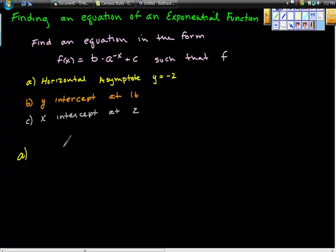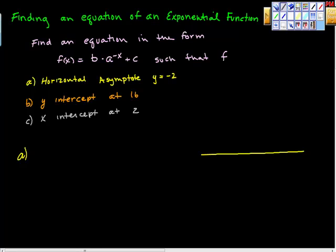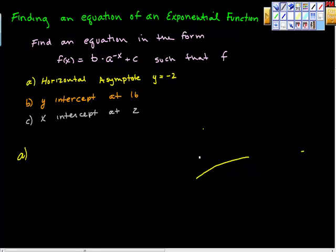Let's start with the horizontal asymptote. A horizontal asymptote is a line that a function approaches — it never quite gets to it, but it approaches that line. A function would either come from below and approach it, getting really, really close, or come at it from another direction. So we want this horizontal asymptote to be at y = -2.